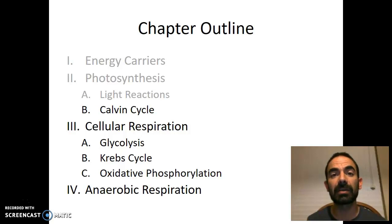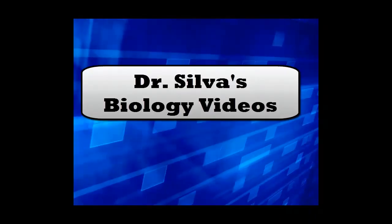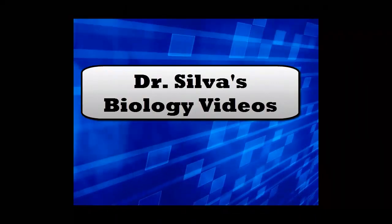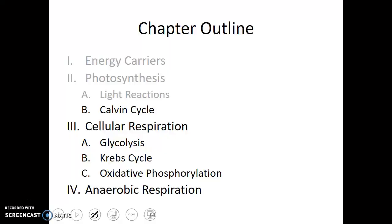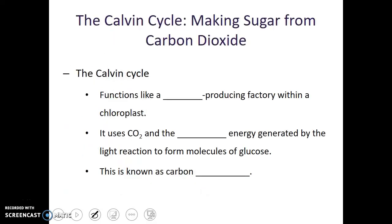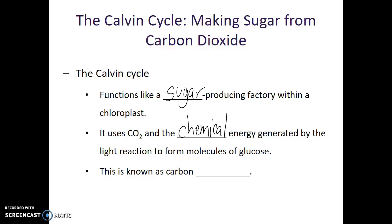In this video, we'll talk about the Calvin Cycle and carbon fixation. Let's talk about the second step of photosynthesis. The Calvin Cycle functions like a sugar-producing factory within the chloroplast. It uses carbon dioxide and the chemical energy generated by the light reactions to form glucose. This process is known as carbon fixation.